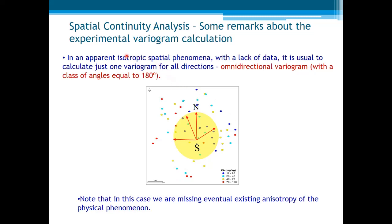A second remark. In an apparent isotropic spatial phenomena with a lack of data, it is usual to calculate just one variogram for all directions. This is called omnidirectional variogram, with just one class of angles equal to 180 degrees. Note that in this case, you are missing eventually existing anisotropy of the physical phenomena. But this is usually a good start for the variogram analysis. Afterwards, we should go for the anisotropy directions, if they exist.